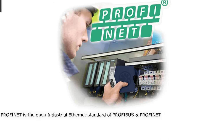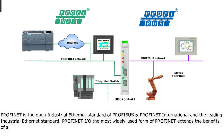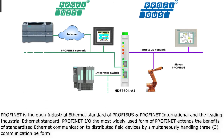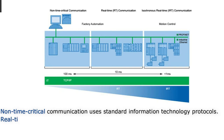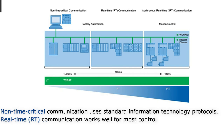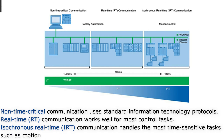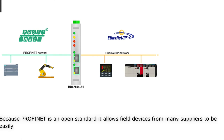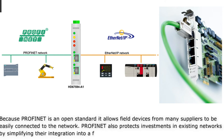Profinet is the open industrial Ethernet standard of Profibus and Profinet International and the leading industrial Ethernet standard. Profinet IO, the most widely used form of Profinet, extends the benefits of standardized Ethernet communication to distributed field devices by simultaneously handling three communication performance levels: non-time-critical communication using standard IT protocols; Real-Time (RT) communication, which works well for most control tasks; and Isochronous Real-Time (IRT) communication, which handles the most time-sensitive tasks such as motion control. Because Profinet is an open standard, it allows field devices from many suppliers to be easily connected, and also protects investments in existing networks by simplifying their integration into a factory-wide network.